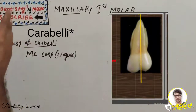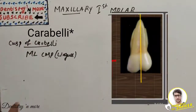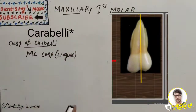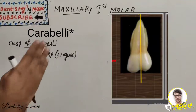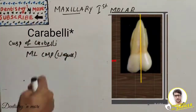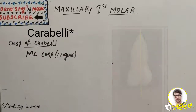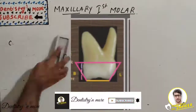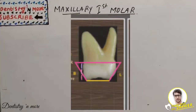The palatal root is conical and ends with a blunt apex which is in line with the lingual groove — you can draw a straight line through the palatal root mid-axis and the lingual groove. Parts of the buccal roots are also seen from this aspect on both sides of the palatal root.